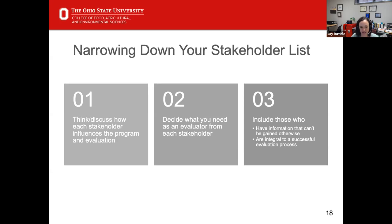As you narrow down that list, you want to make sure that you include those who have information that you can't get otherwise and those who are integral to the successful evaluation process. In the case of the grant, I really think the PI has information that we can't gain otherwise, but because of the situation, we can't utilize them for the evaluation. We've actually had to shift some of our evaluation goals and objectives and focus on some other things we hadn't originally planned on.